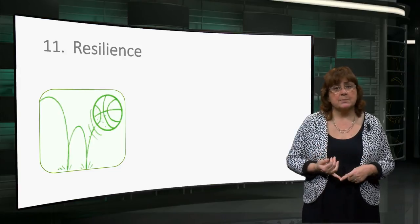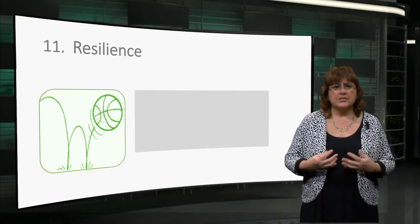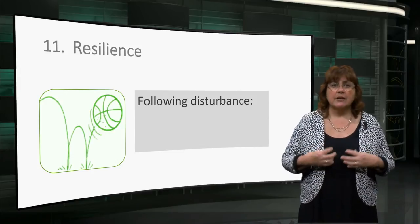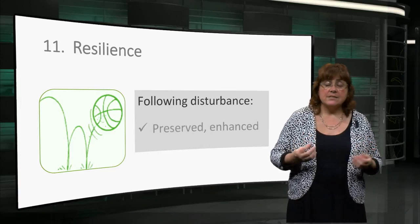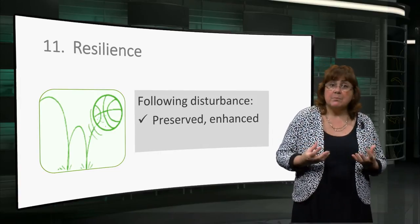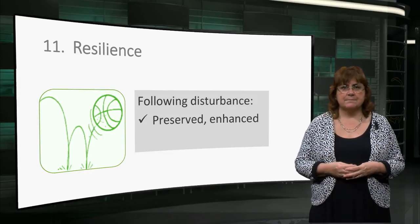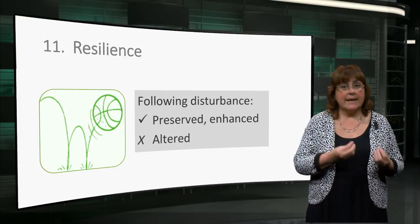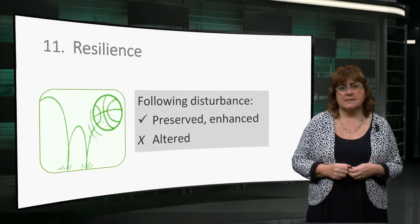The last principle is that of resilience. Ecological resilience is the capacity of the ecosystem to maintain its integrity following consecutive disturbances. An ecosystem is considered resilient when it is able to withstand and even benefit from reasonable foreseeable disturbances. An ecosystem is considered vulnerable when its character and functional integrity will alter after single disturbances.